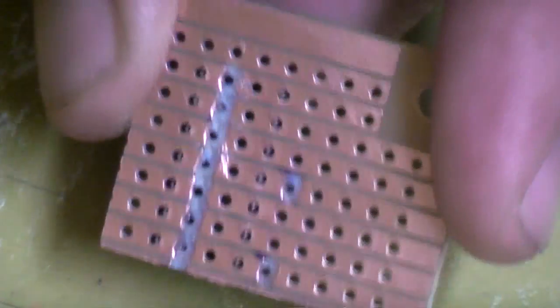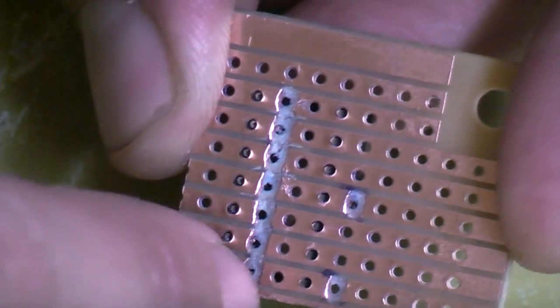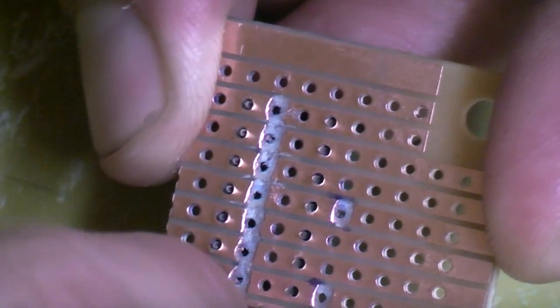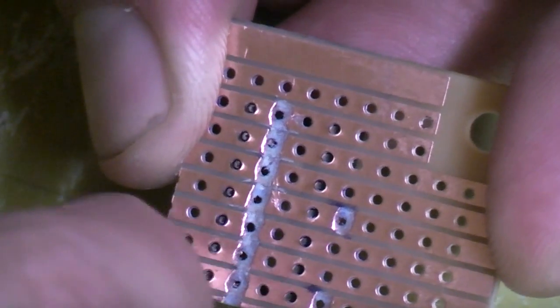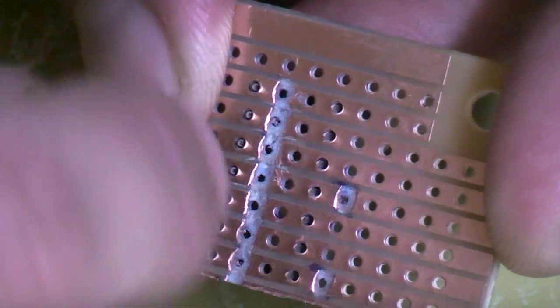So looking at the back of our board, you can see how I've cut a track here. And basically it goes up through 7 tracks because the IC we're using is a 14 pin, so it's 7 pins per side.